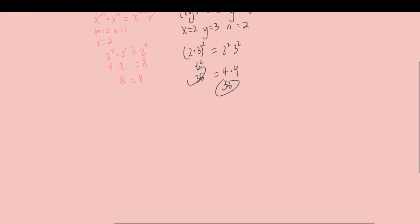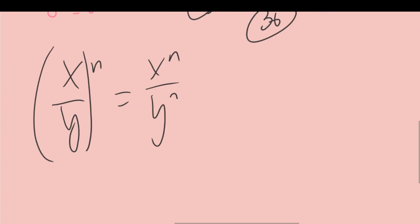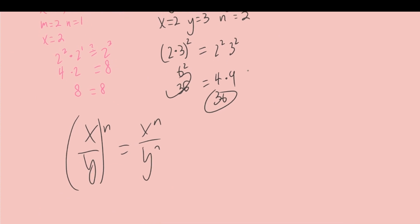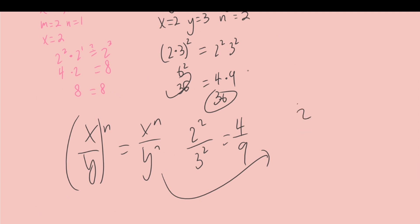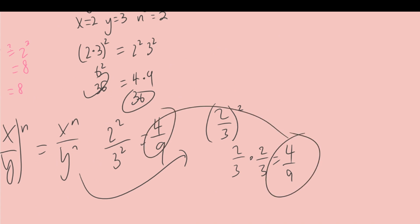Let's look at one more: x over y to the n equals x to the n over y to the n. Using x equals 2, y equals 3, n equals 2, we get 2 to the 2 over 3 to the 2, which is 4 ninths, and that also equals 4 ninths. This is also correct.